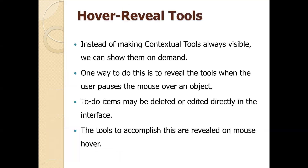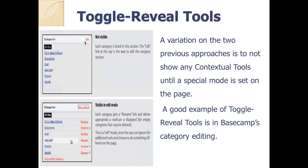The second type is hover reveal tool. When you move the mouse over a particular content, you can see whether that context is clickable or not. On moving the mouse over the context, it will reveal what operations can be performed. This makes tools visible only on demand — the demand being moving the mouse over the object.